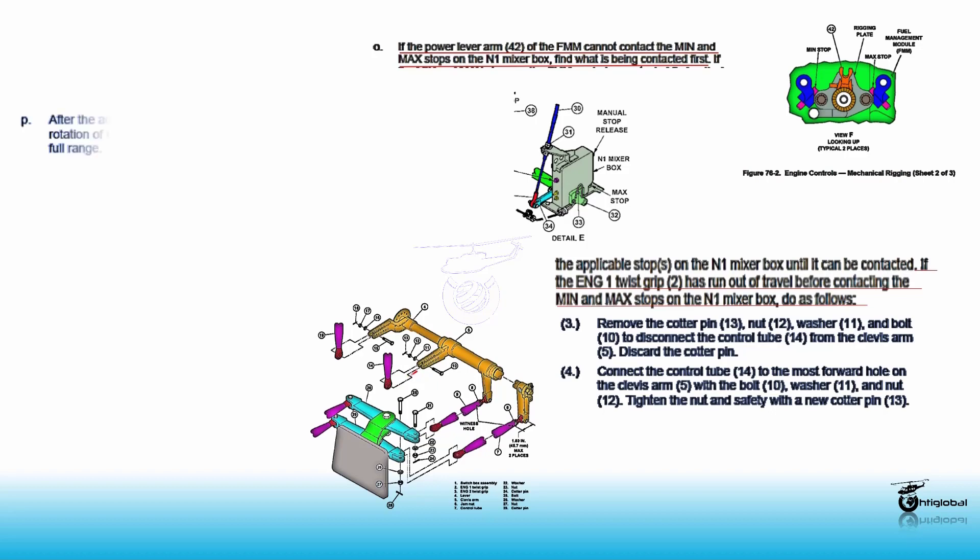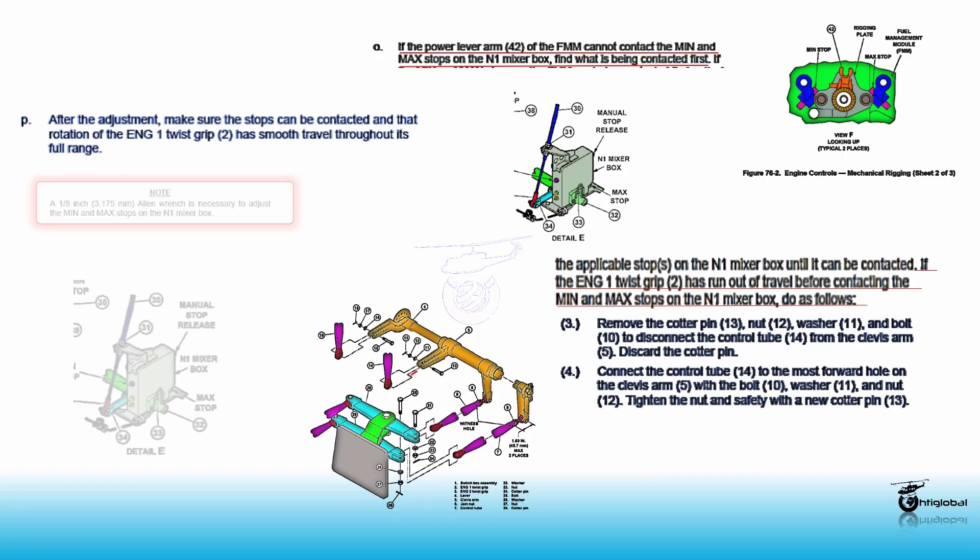After adjustment, make sure the stops can be contacted and that rotation of the engine number 1 twist grip 2 has smooth travel throughout its full range. Note: a one-eighth inch Allen wrench is necessary to adjust the MIN and MAX stops on the N1 mixer box.